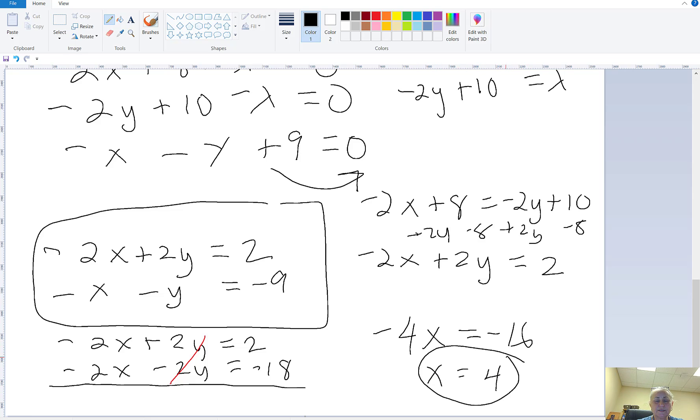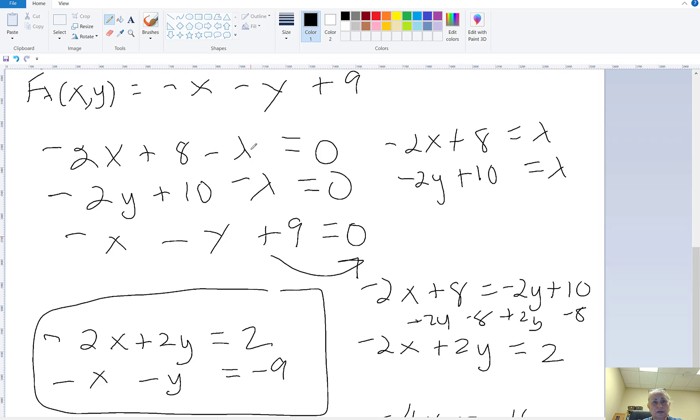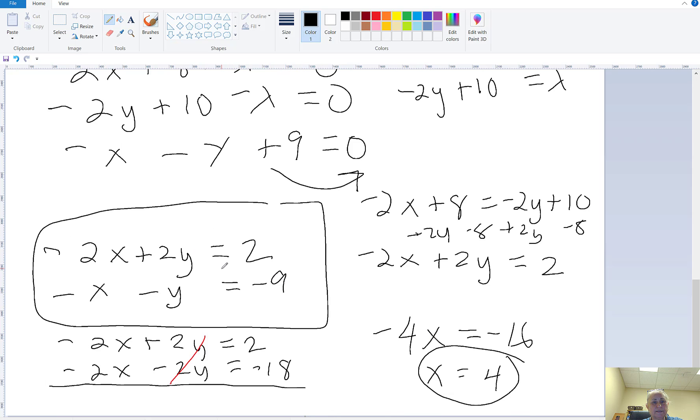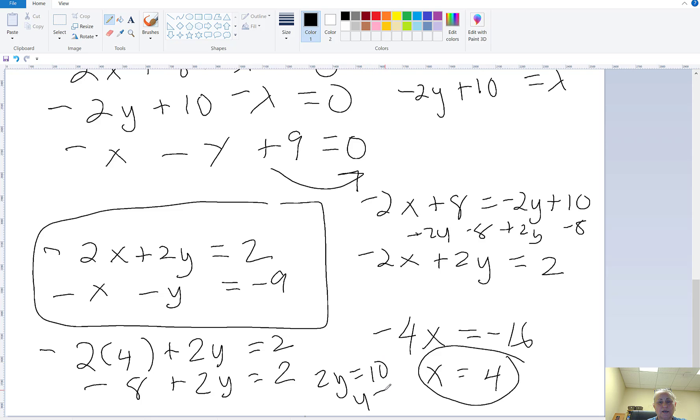Once I know what x is, I can go back and I can find y from here. Let me just put it in this first one here. Minus 2 times 4 plus 2y equals 2. Negative 8 plus 2y equals 2. If I add 8 to both sides, that would be 2y equals 10, so y equals 5.